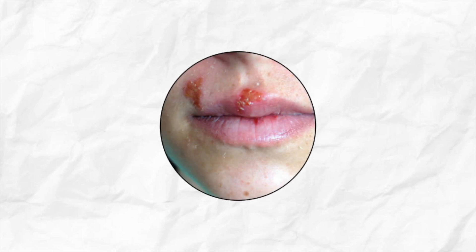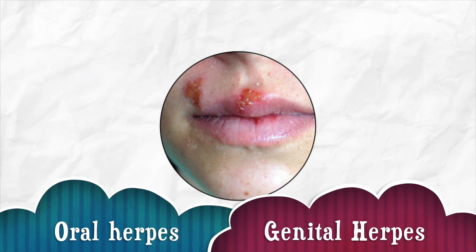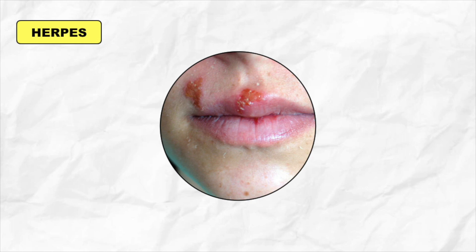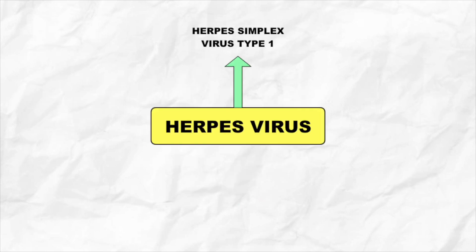Hello everyone, welcome to Medina's Academy. When you first hear the word herpes, you mostly think of oral herpes or genital herpes. But did you all know that there are 8 different types of herpes that can affect humans? Mainly, herpes is a term coined due to infection with herpes simplex virus. So in this video, we are basically going to discuss 2 types of herpes, type 1 and type 2.